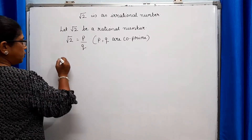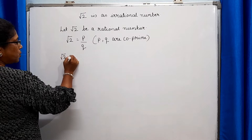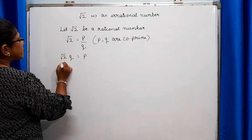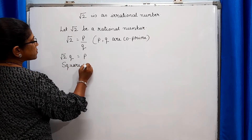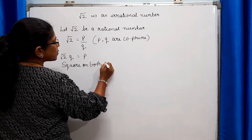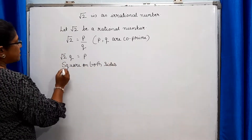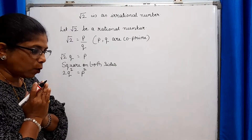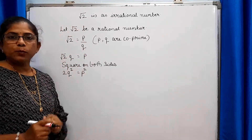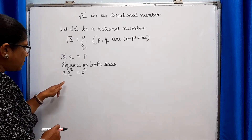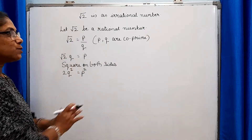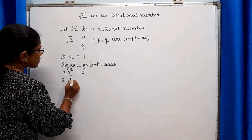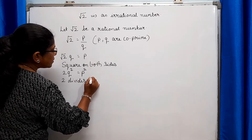Now, if root 2 is equal to P upon Q, then root 2 × Q is equal to P — we just cross multiply. Let's square both sides. When we square both sides, we get 2Q² is equal to P². Now, 2Q² = P² means 2 multiplied by Q² gives us P², so this means 2 divides P².